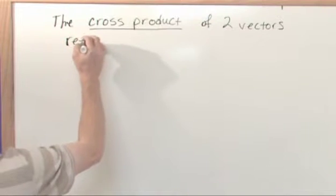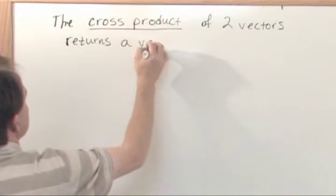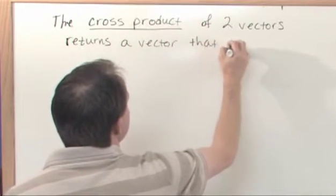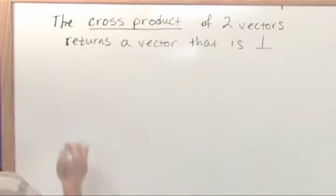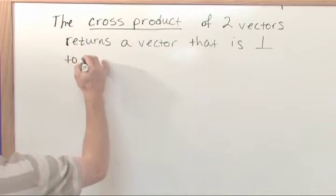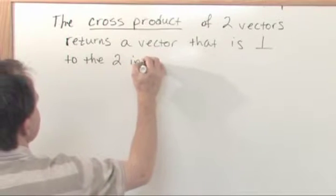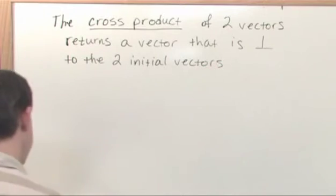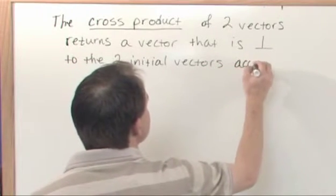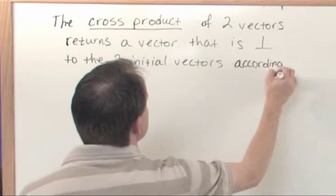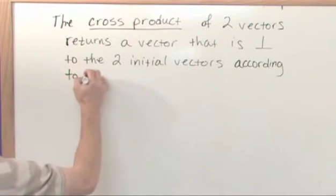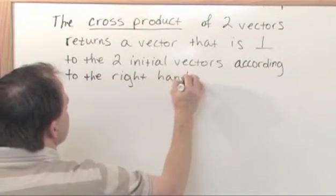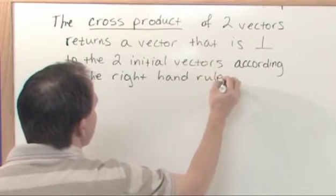Returns a vector that is perpendicular to the two initial vectors, according to the right-hand rule.